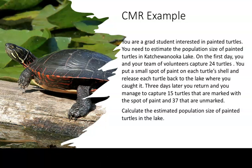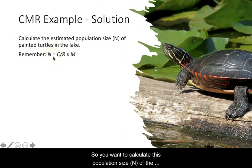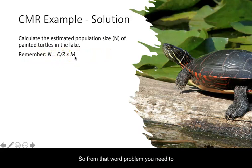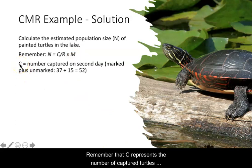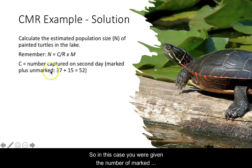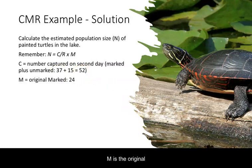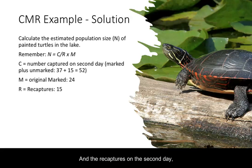To calculate the population size N of the painted turtles, remember that N equals C divided by R times M. From the word problem you need to extract these variables. C represents the number of captured turtles on the second sampling day — you were given the number of marked individuals and the number of unmarked individuals, so you add those together to get C = 52. M, the original marked and released individuals, was 24, and the recaptures on the second day — those turtles with the spot of paint on their shell — is 15.